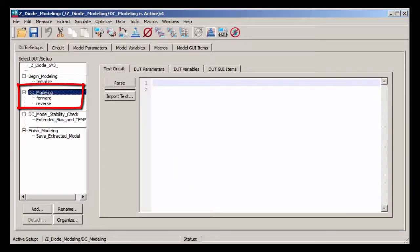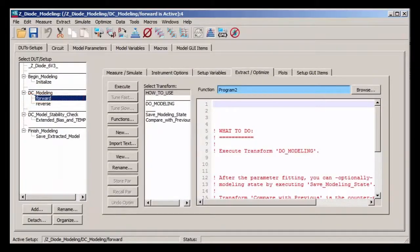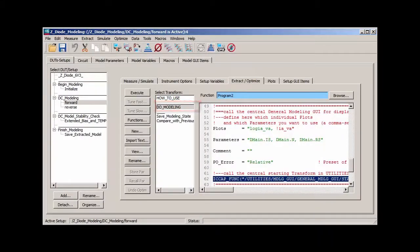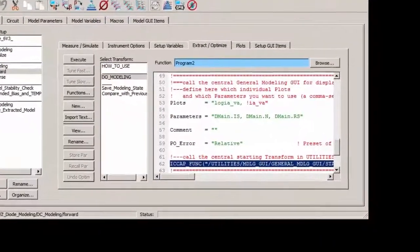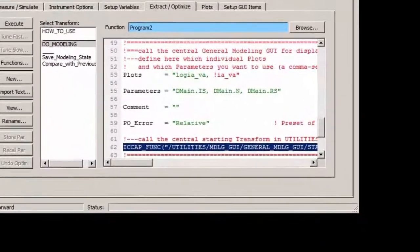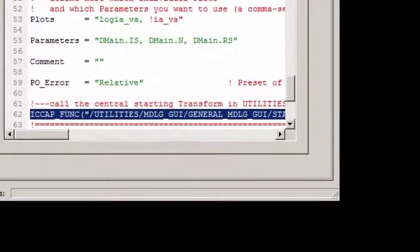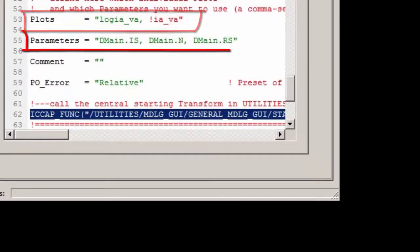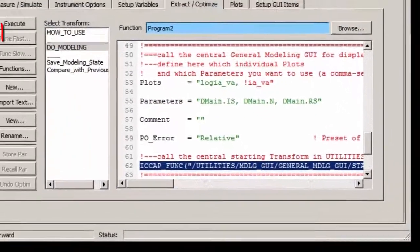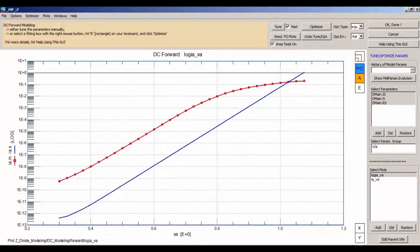In DoIt DC modeling, I select the setup forward and then transform do modeling. This transform contains the function call to the simplified user interface located in the preloaded utilities file, as mentioned before. All I need to do here is to define two variables: one called plots and the other called parameters. After clicking the execute button, I get this window.